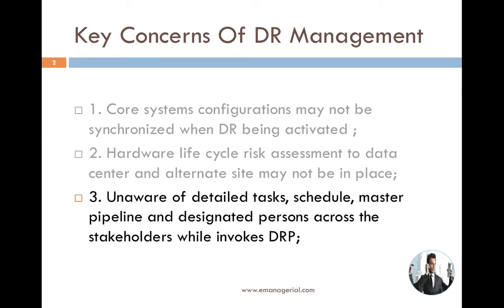The next concern is stakeholders being unaware of the detailed task schedule, master pipeline, or designated person responsibilities when invoking the DRP. Sometimes stakeholders are not aware of particular processes — such as detailed tasks or activities that need to be done from tier 1 to tier 2 or tier 3, like scheduling a master pipeline. Designated persons assigned by the team lead or supervisor need to understand their roles and responsibilities and what specific tasks must be prepared before conducting the DR exercise.